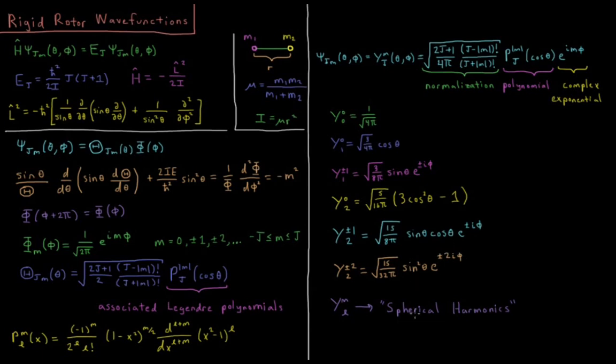So these spherical harmonics functions may look a little familiar. Maybe not, but these are actually the angular part of the hydrogen atom atomic orbitals. So we'll see these functions again in the hydrogen atom atomic orbitals. These are the things that give atomic orbitals their shape.